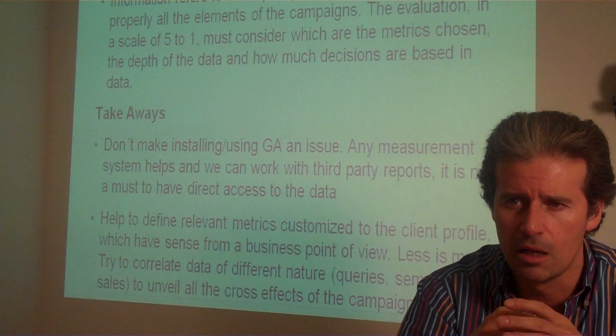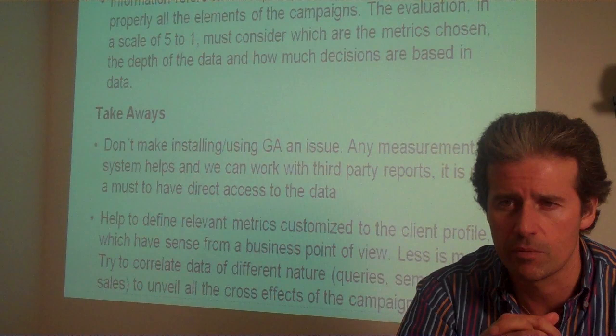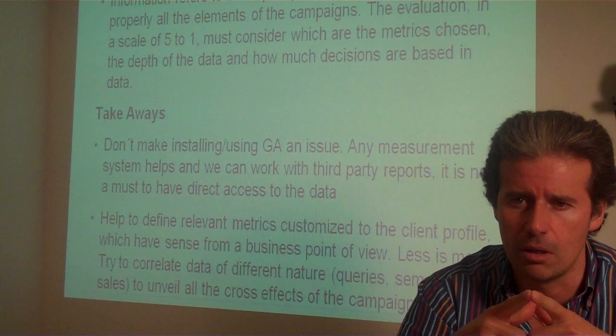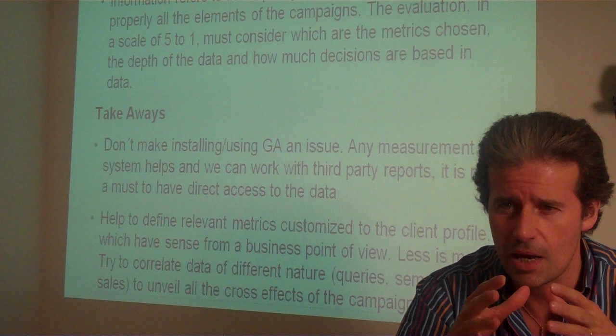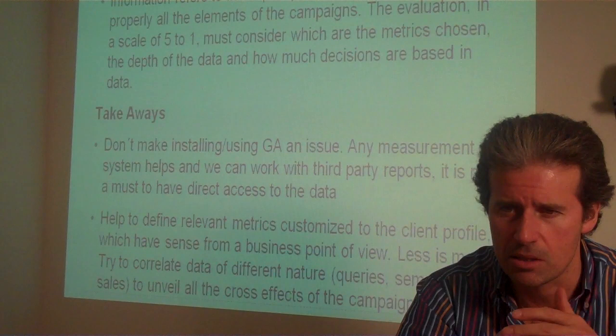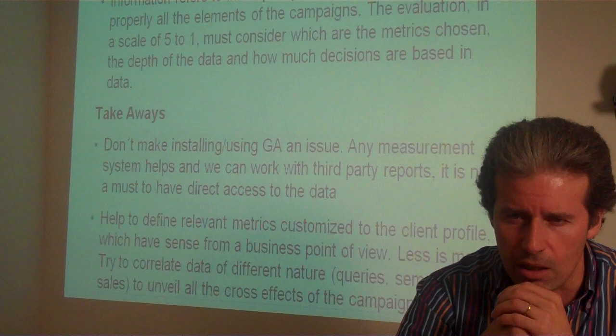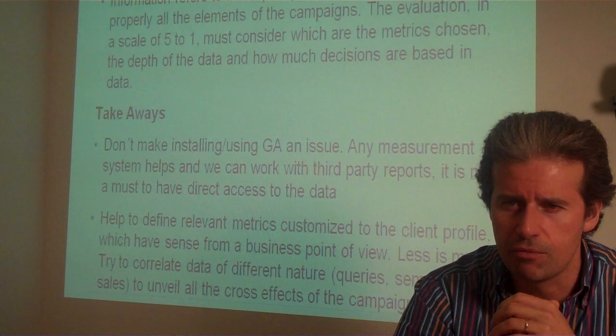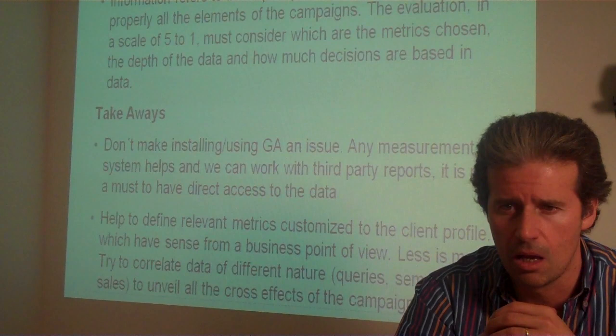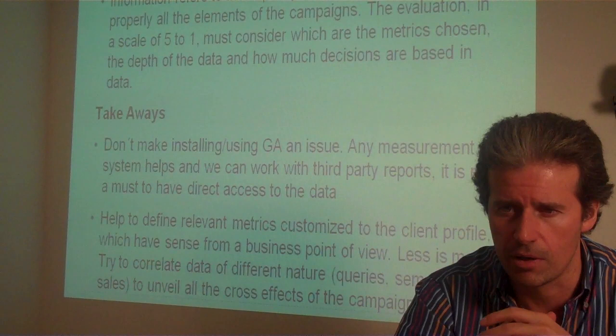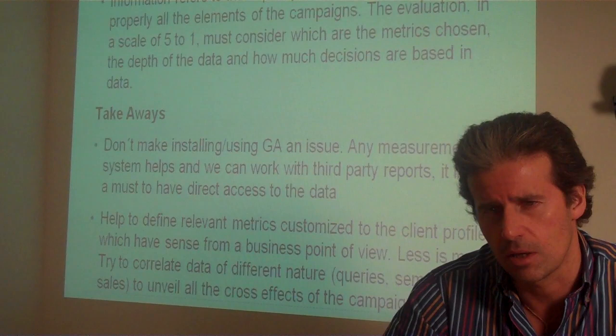I for Information. Information refers to the capacity of the client to properly measure all the elements of the campaigns. Evaluation on a scale of 5 to 1 must consider which metrics are chosen, the depth of data, and how much decisions are based on data. We don't have to make installing or using Google Analytics an issue, because any measurement system helps and we can work with third-party reports. We have to develop metrics tailored to the client profile which make sense from a business point of view. Try to correlate data of different nature — queries, SEM, display, sales — to unveil the cross-effects of the campaigns.